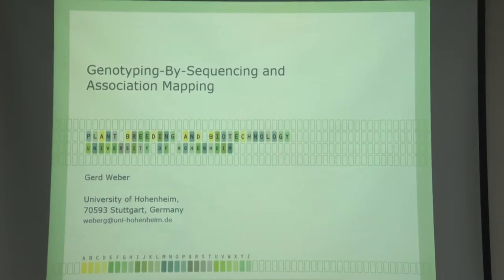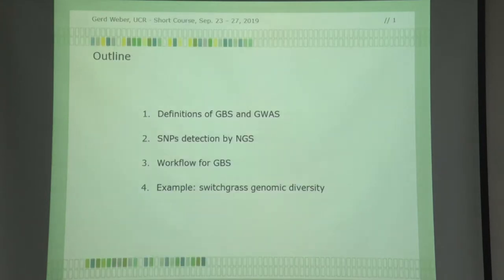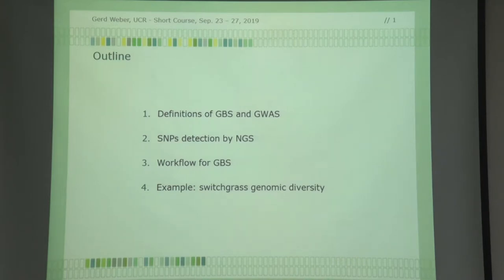Now we go away from assembling genomes and go to some more useful things, so to put it. We'll use sequence information to actually map plants. What I want to do now is go on to genotyping by sequencing and association mapping. We need a couple of definitions on genotyping by sequencing and genome-wide association mapping.